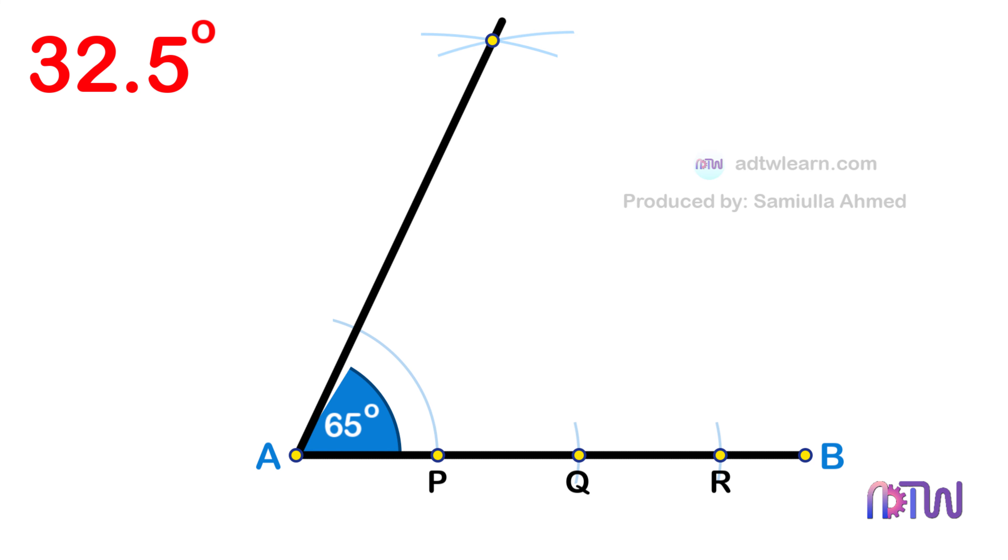Next, we know that half of 65 degrees will be 32.5 degrees. Therefore, we need to divide this 65 degree angle in half.